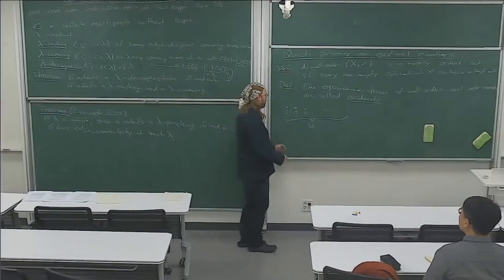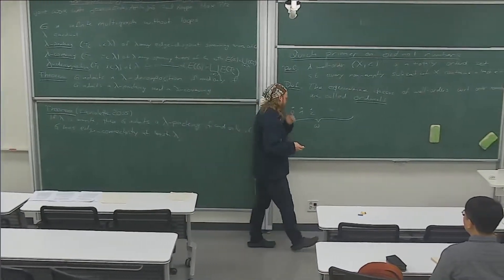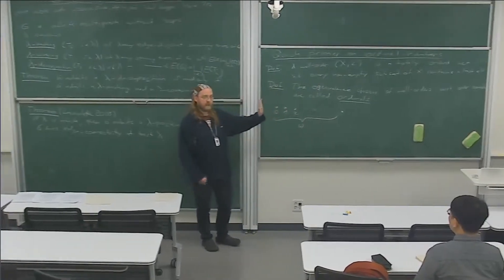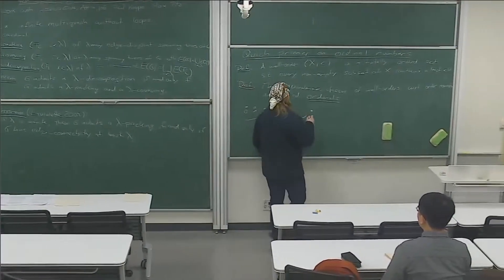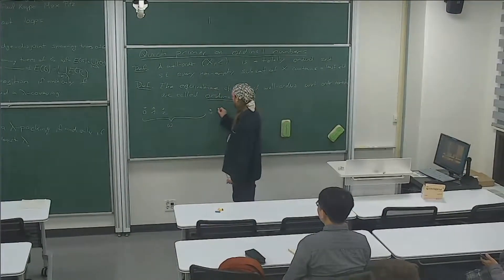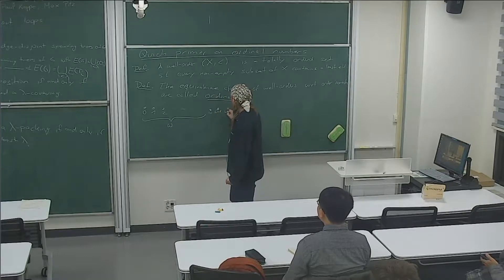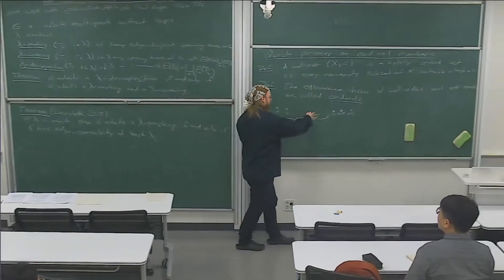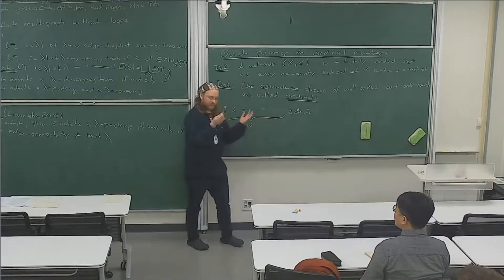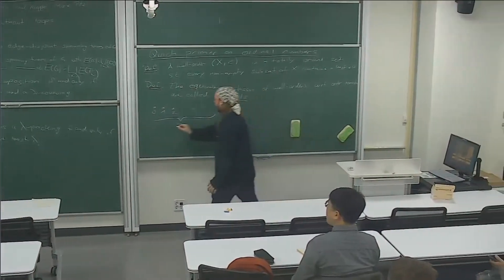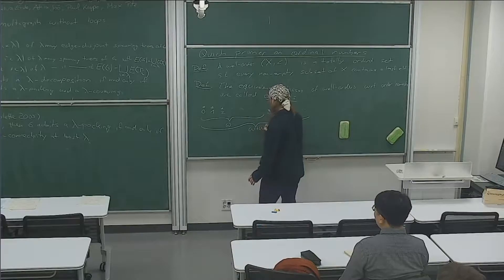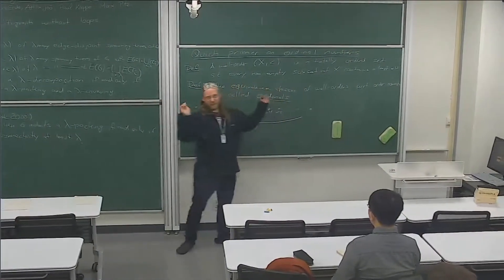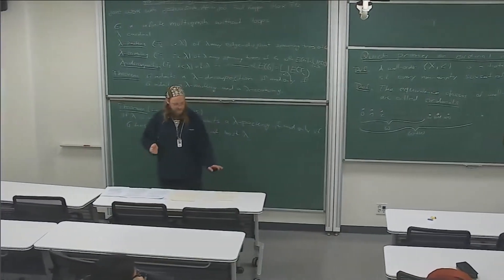We can call that element omega, and put another one on top called omega plus one, then omega plus two, and so on — all of these are still well-orders. So we count up to infinity and then just continue counting. We can do that until we reach omega plus omega — counting to infinity twice — and then put another element on top, and so on. All of these are well-orders and ordinals.